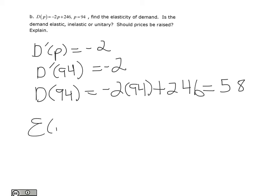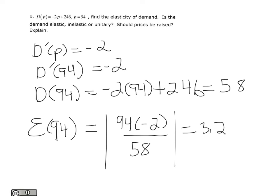So finding e of p, or e of 94, I should say, is the absolute value of 94 times negative 2 all over 58. Punch that in the calculator, take the absolute value, and we get 3.241. This is definitely greater than 1.